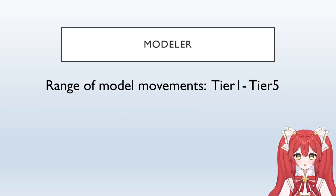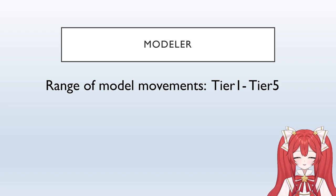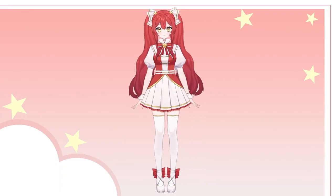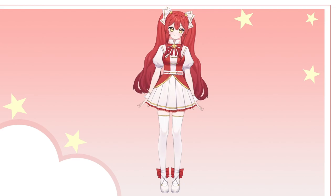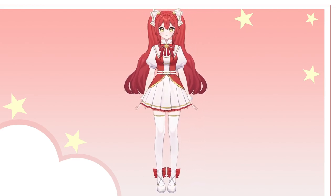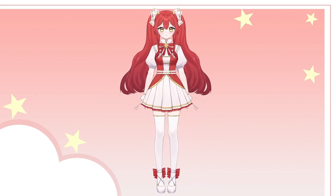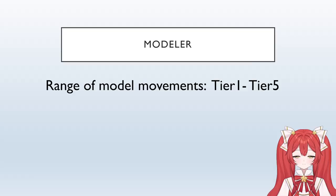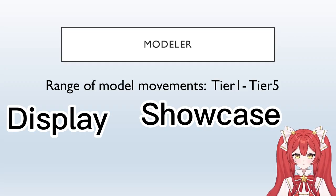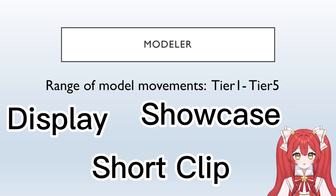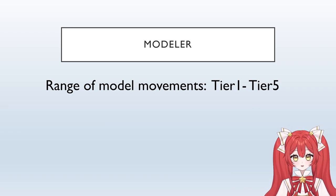Finally, we come to the modeler part. As I know, model movement contains 5 tiers — Tier 1 to Tier 5. The higher the number, the more smoothly it moves, and of course, the more expensive it is. Watch some of the modeler's displays, showcases, or short clips to see if you like their work. Also remember to compare prices.